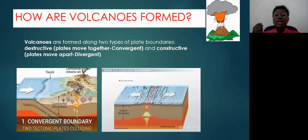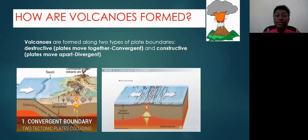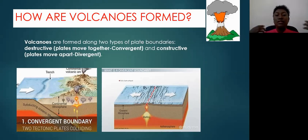Remember, to converge means to come together. So at a convergent or destructive plate margin, plates are crashing into each other — collision is happening. That is one plate margin where volcanoes occur.